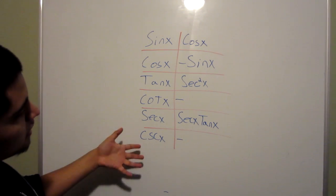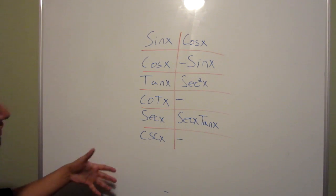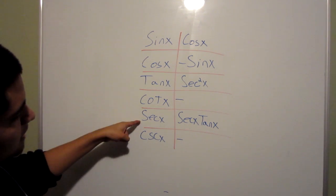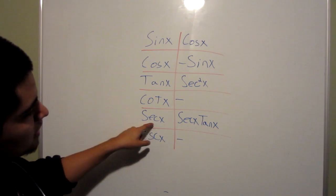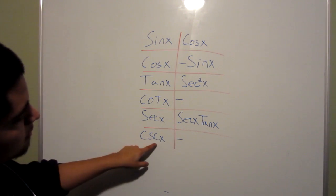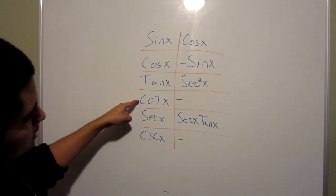And you also know, or another way to keep this memorized, is that for secant x and cosecant x, the derivative will have themselves in it. So secant x, secant x. So the derivative of cosecant x is cosecant x, cotangent x.